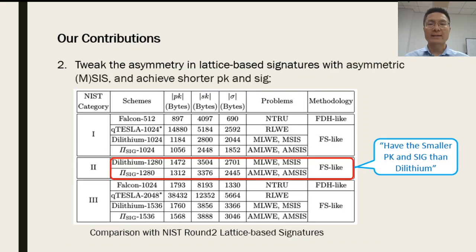We also propose asymmetric MSIS problems for obtaining signature schemes with shorter public keys and signatures. Compared to the NIST Round-2 submissions, our scheme has smaller public key and signature size than Dilithium.